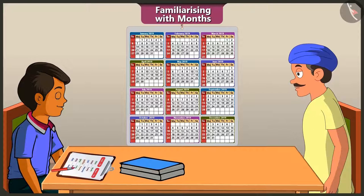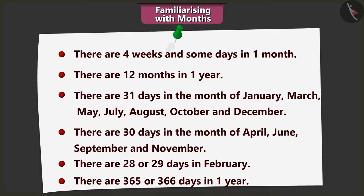Chotu, tell me, what all do you remember about the months of a year? There are 4 weeks and a few days in a month. There are 12 months in a year. January, March, May, July, August, October and December months have 31 days. April, June, September and November months have 30 days. Chotu, how many days are there in February? February has 28 or 29 days. How many days are there in a year? There are 365 or 366 days in a year.